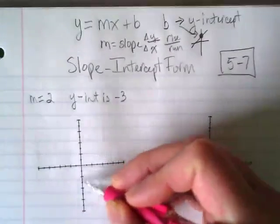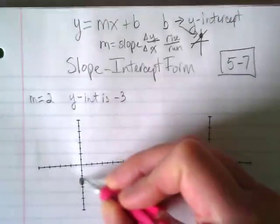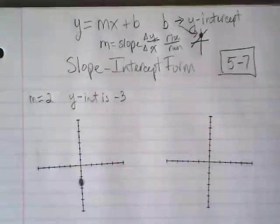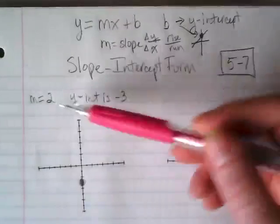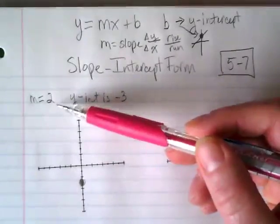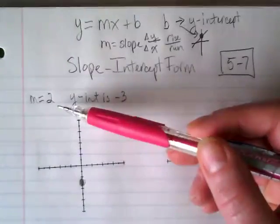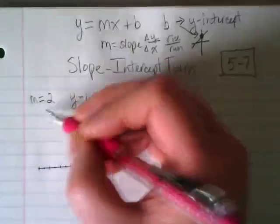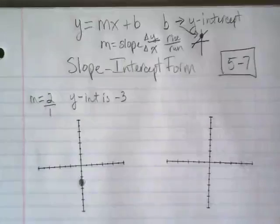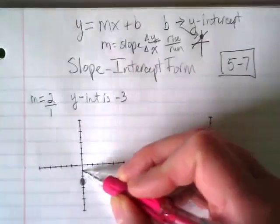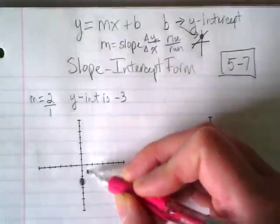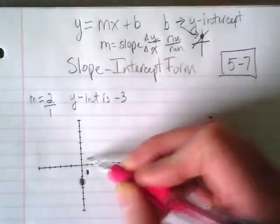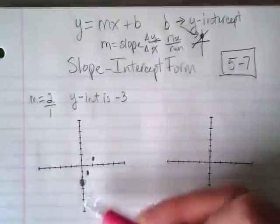So we're going to go down here to the negative 3. That is a point on our graph. We graph by finding a second point on our graph. We're going to use the slope to do that. And if I tell you the slope is 2, it's rise over run. So what's the invisible number right now? 1. So our slope is 2 over that invisible 1, meaning that we rise up 2 and run over 1. Rise up 2 and run over 1. And that gives us our line.